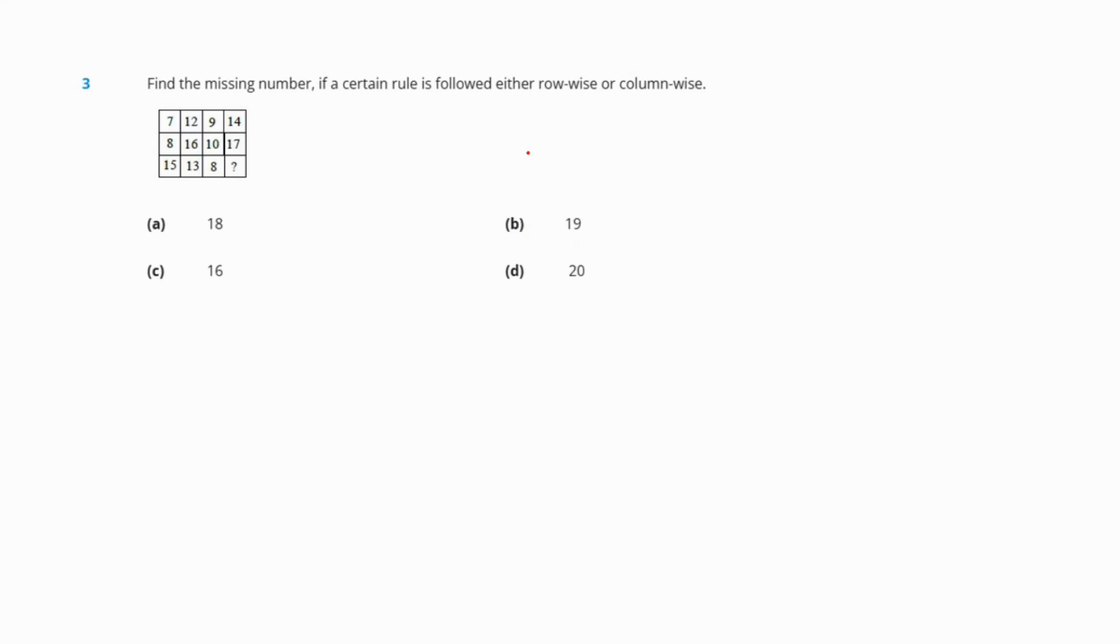Question three: Find the missing number if a certain rule is followed either row-wise or column-wise. The rule here is 7 plus 12 plus 9 equals 28, divided by 2 is 14. Next, 8 plus 16 plus 10 equals 34, divided by 2 is 17. In the third case, 15 plus 13 plus 8 equals 36, divided by 2 is 18. So our correct answer is option A, which is 18.